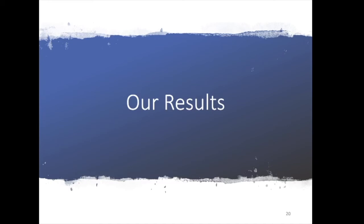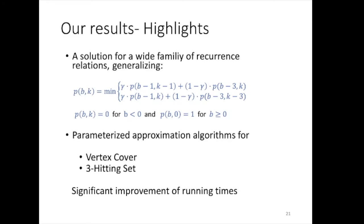The paper includes two main results. The first is a solution for recurrences: we generalize the recurrence relation into a family of recurrences and provide a solution for it. Then we use randomized branching along with this formula for the recurrences to derive parameterized approximation algorithms for vertex cover and for 3-hitting set. Those obtain a significant improvement over the running times of previous parameterized approximations for these problems.